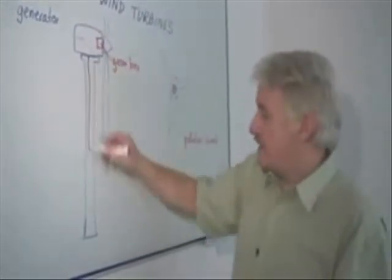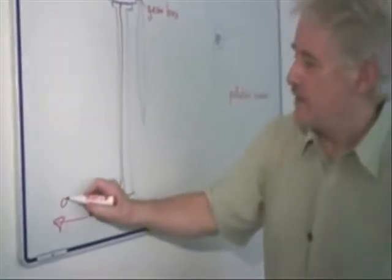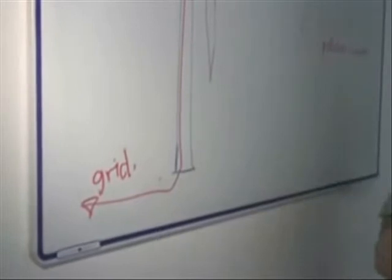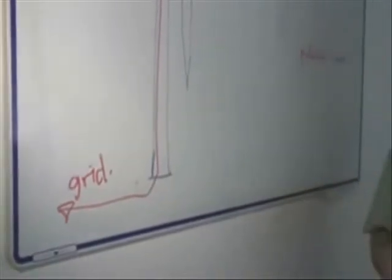This electricity then is fed down the tower and out to the electricity grid, where it can supplement electricity produced in other ways.